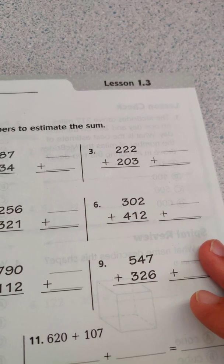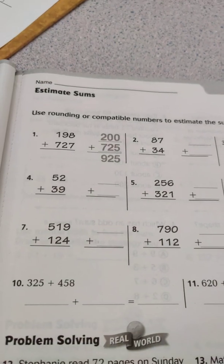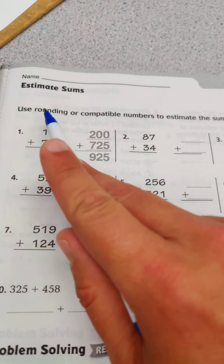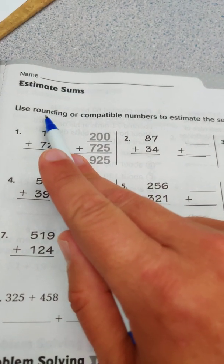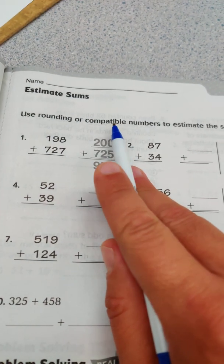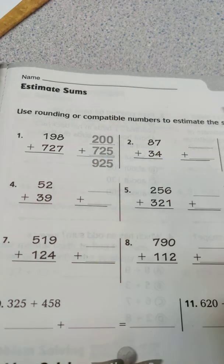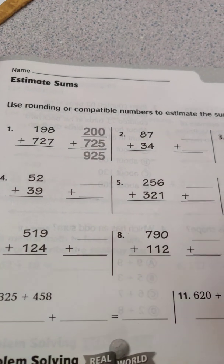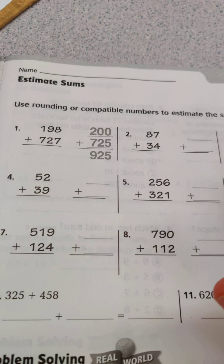This is 3rd Grade Go Math Lesson 1.3. Today for my class we're focusing on rounding. Compatible numbers are not part of our standards, so we're not going to worry about those.